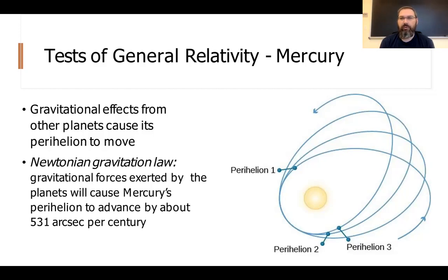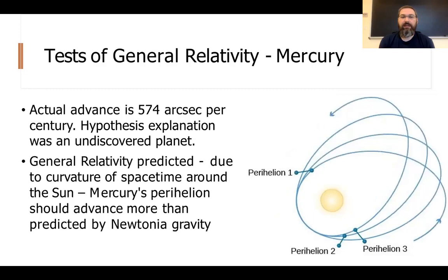When we actually observe Mercury's motion, the advance isn't 531 arc seconds per century but about 574 arc seconds per century. That difference wasn't explained by Newton's gravity, but under Einstein's general relativity it works out exactly right. This is one of the mysteries of Mercury's perihelion precession that couldn't be fully explained using Newton's gravity.